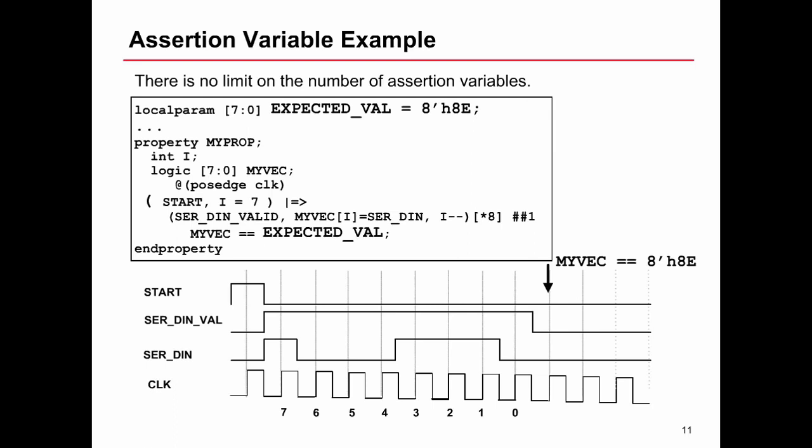Following the eight occurrences of serial_d_in valid, we give a boolean expression which says myvec equals expected_val. Expected_val is this local parameter defined as a constant, so its value in hex is 8E. If we follow this through, when start occurs on the diagram for one of those cycles of posh clock, on the next cycle we expect to see serial_d_in valid for eight cycles. If we count them, the numbers here are seven down through zero, so that's eight cycles. On each cycle we're assigning to myvec[i] serial_d_in and decrementing i afterwards. On the first iteration here on seven, the value of i is seven, that came from the assignment.